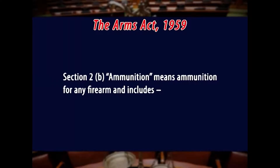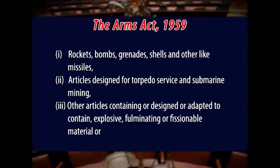The Arms Act 1959 extends to the whole of India. This Act also defines certain words which bear specific meanings as used in the Act. Section 2B defines ammunition, which says that ammunition means ammunition for any firearm and includes: first, rockets, bombs, grenades, shells, and other like missiles.